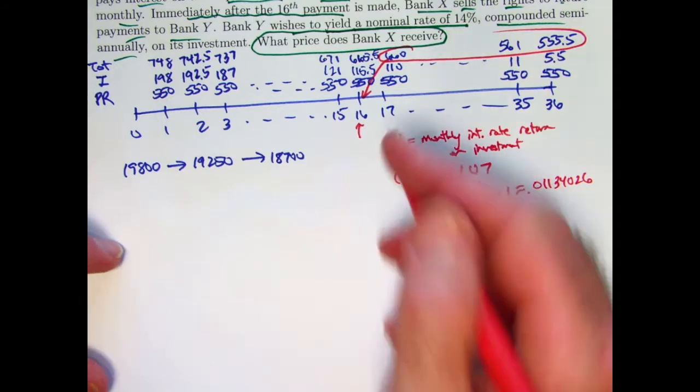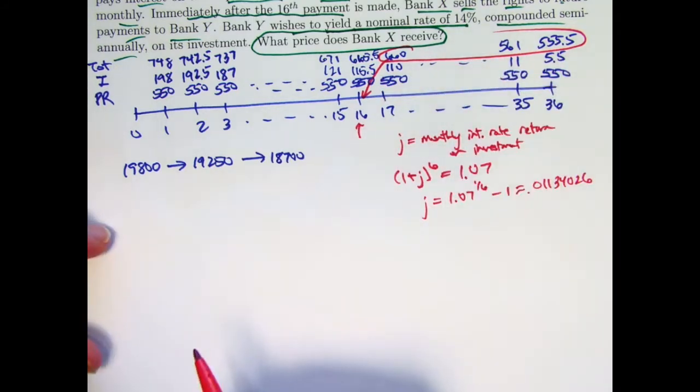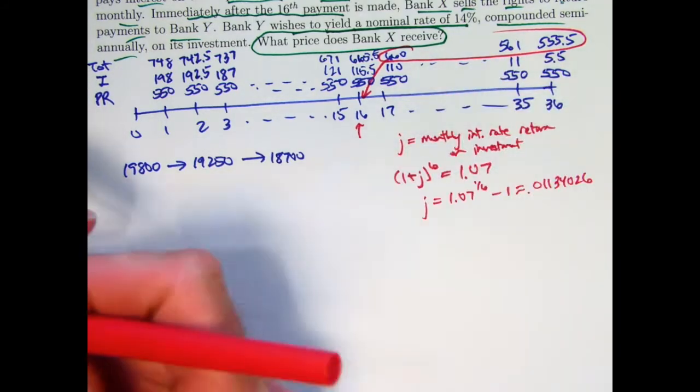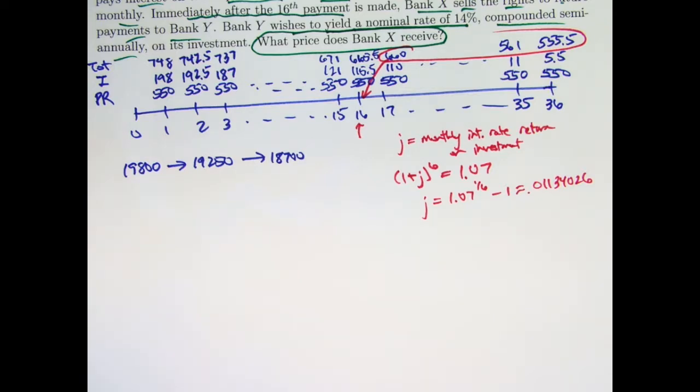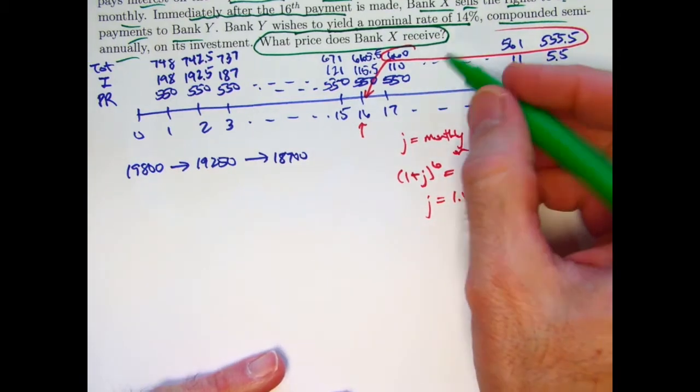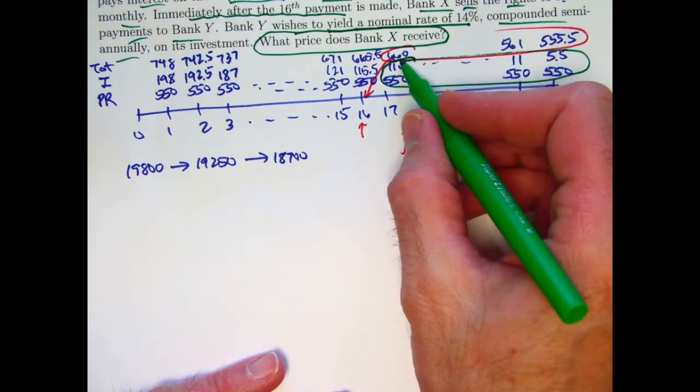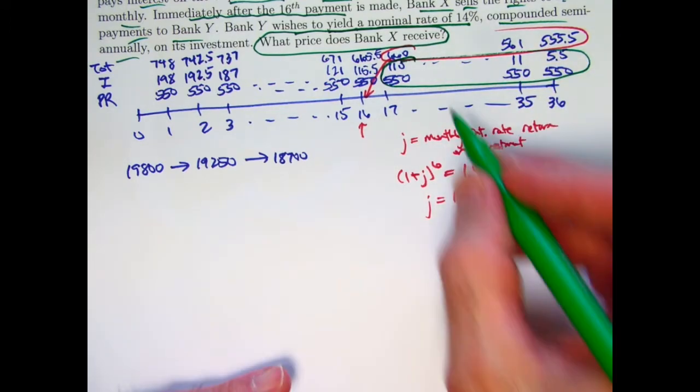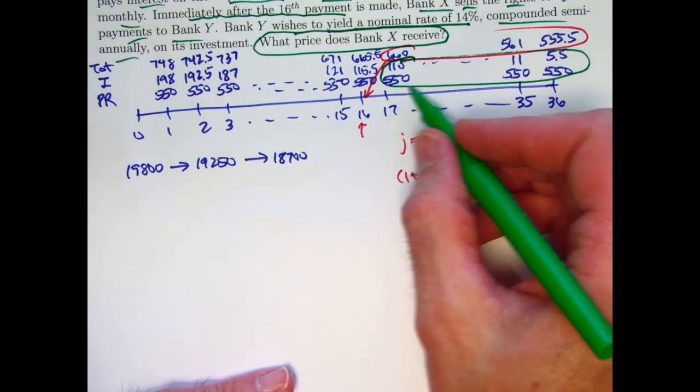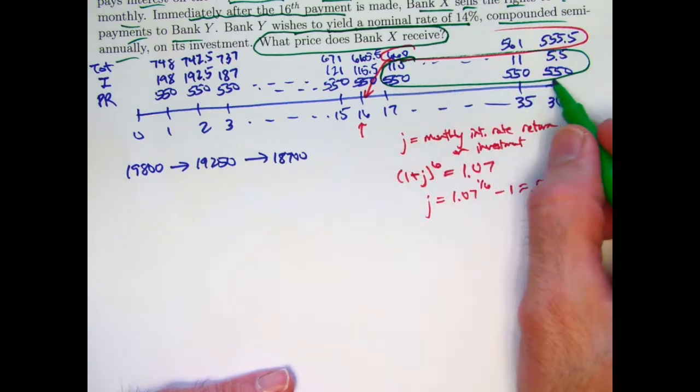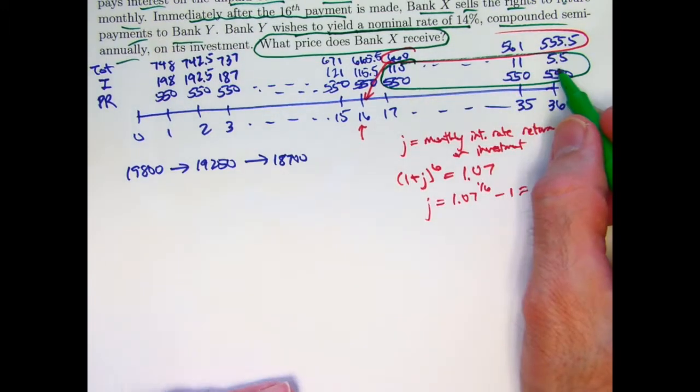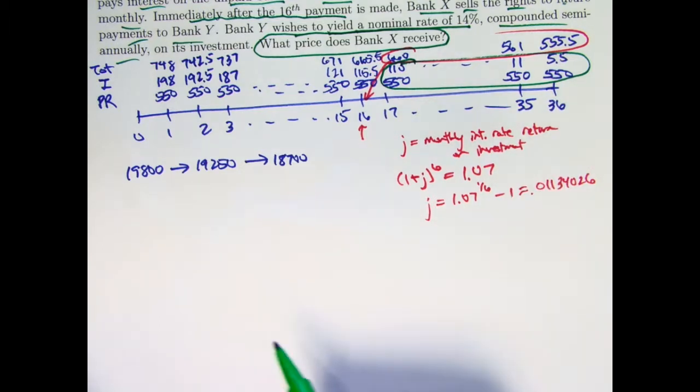That's their monthly interest rate return on their investment. And that's going to help us decide what should they pay for this income stream. It is helpful to think of the income stream based on both the principal reduction and the interest, to think of these two income streams separately as adding up to the given income stream. This one, 550, that's a level payment stream, and this one is a decreasing payment stream. So I want to figure out the present values of those things based on this interest rate per month.